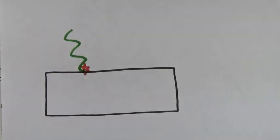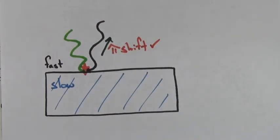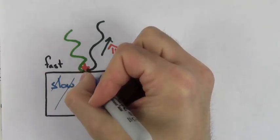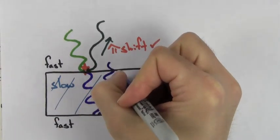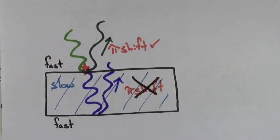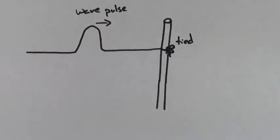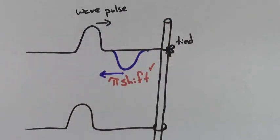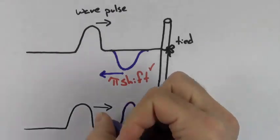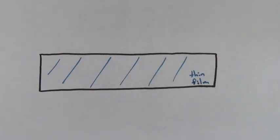If you want to create a pi phase shift in light, just reflect it off of a slow material — a material through which it would travel more slowly than the material it was in originally. Light traveling in a slow material that reflects off of a fast material does not experience a pi phase shift. This is similar to wave pulses on a string: if the end of the string is tied to a pole, the wave is reflected with a pi phase shift. If the end is connected to the pole but allowed to move up and down, the wave reflects without a pi phase shift.